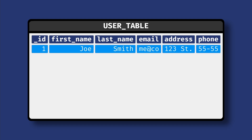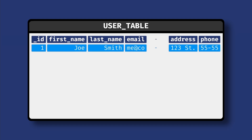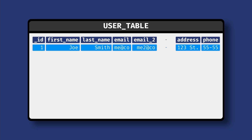It seems pretty straightforward, but what happens when we want to add another email address to this user? Well, we'll have to add another column called email2. Then, if for some reason there's a third email address, we'll need to add a column called email3.